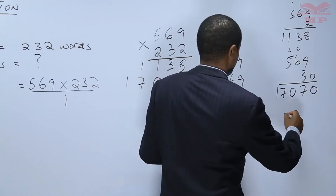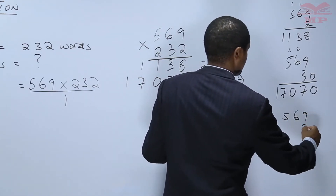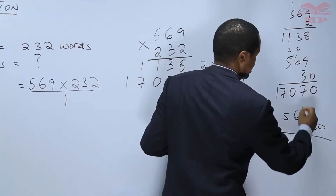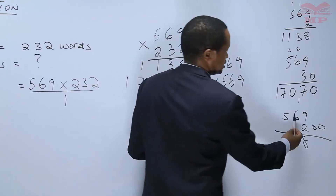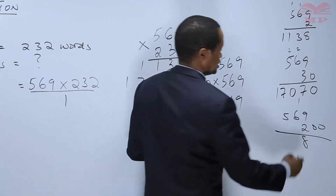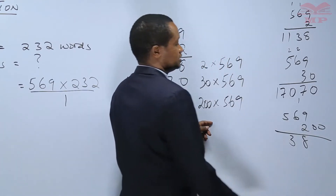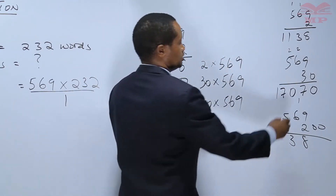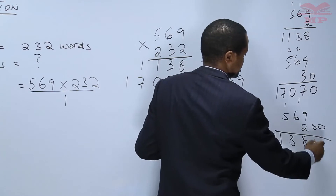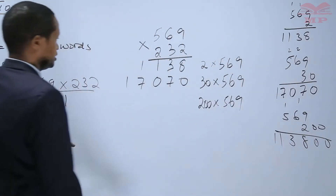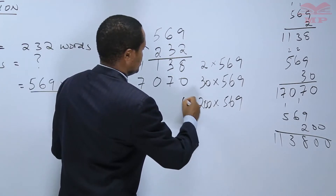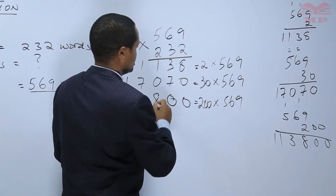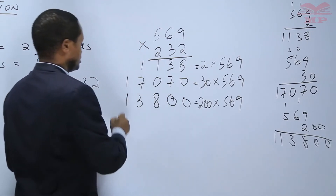The last number to multiply is 569 times 200: 9 times 2 is 18, write 8, carry 1. 6 times 2 is 12 plus 1, which is 13, write 3, carry 1. 5 times 2 is 10 plus 1, which is 11. There are two zeros as placeholders, so we write: 0, 0, 8, 3, 1, 1.